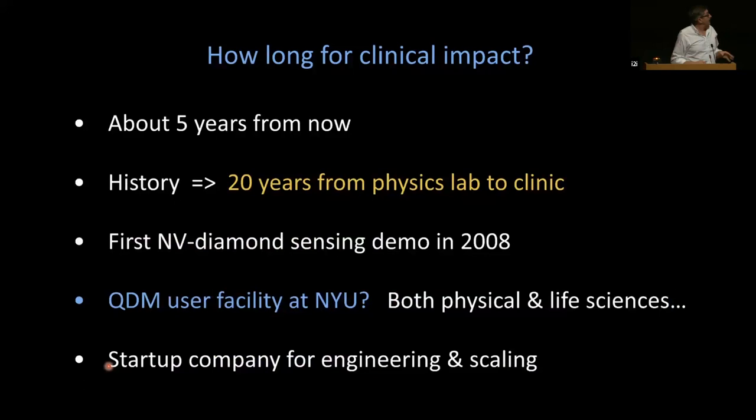So how long for clinical or pre-clinical impact? Maybe about five years from now? Trying to be realistic. My experience tells me it takes about 20 years to go from physics lab to clinic. But remember, the NV fields got started about 15 years ago. Maybe we should have a user facility at NYU for both physical and life sciences. And after that, you typically need some company to do the engineering and scaling so we can really not just have a few special labs get their special tools, but it can be there for everyone if it's useful.